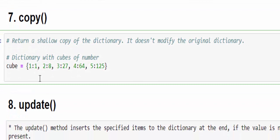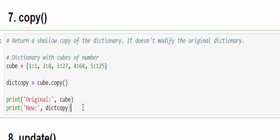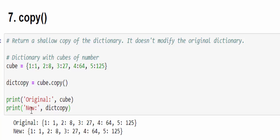The next method is the copy method. We may be in a scenario where we don't want to make any changes to the existing dictionary variable. In that case, we take a copy of the existing dictionary and do the manipulation on it. It's very easy: cube.copy(). This creates a copy which we save to a new variable — dictionary_copy. Printing both the original and the new copy, we can see the original and the copy. Any manipulation done to the copy will not affect the original.